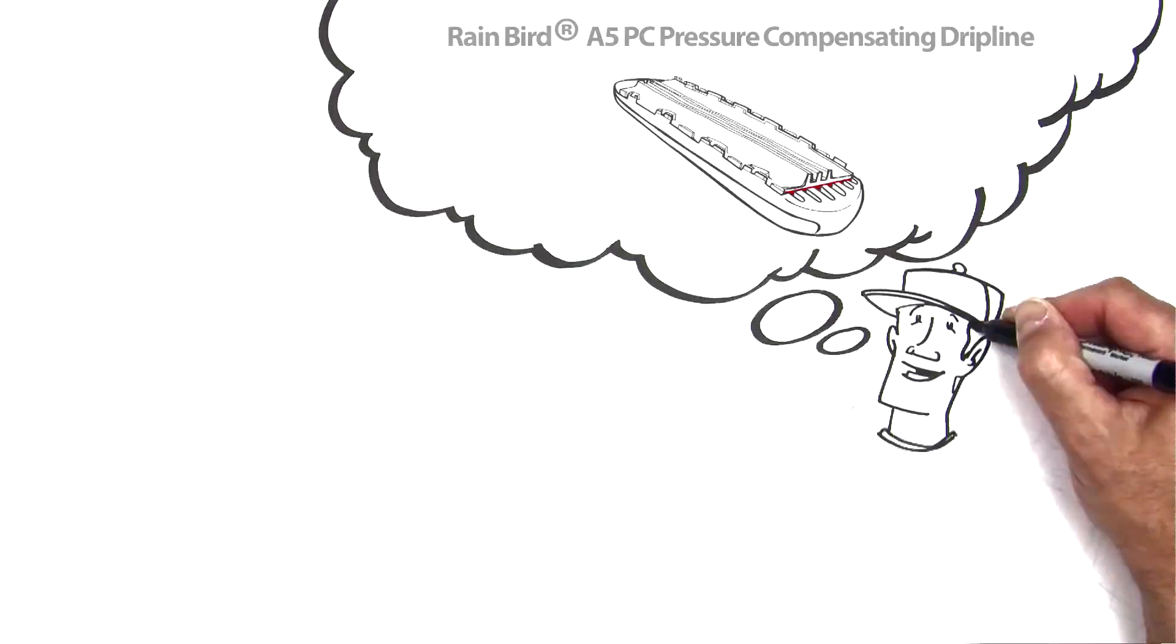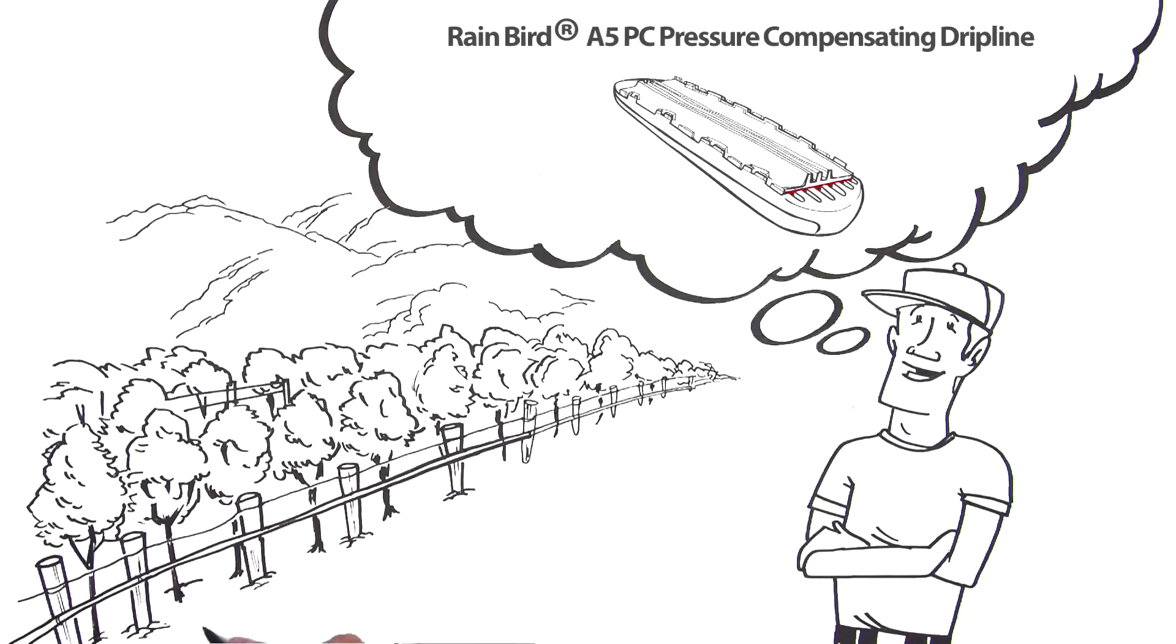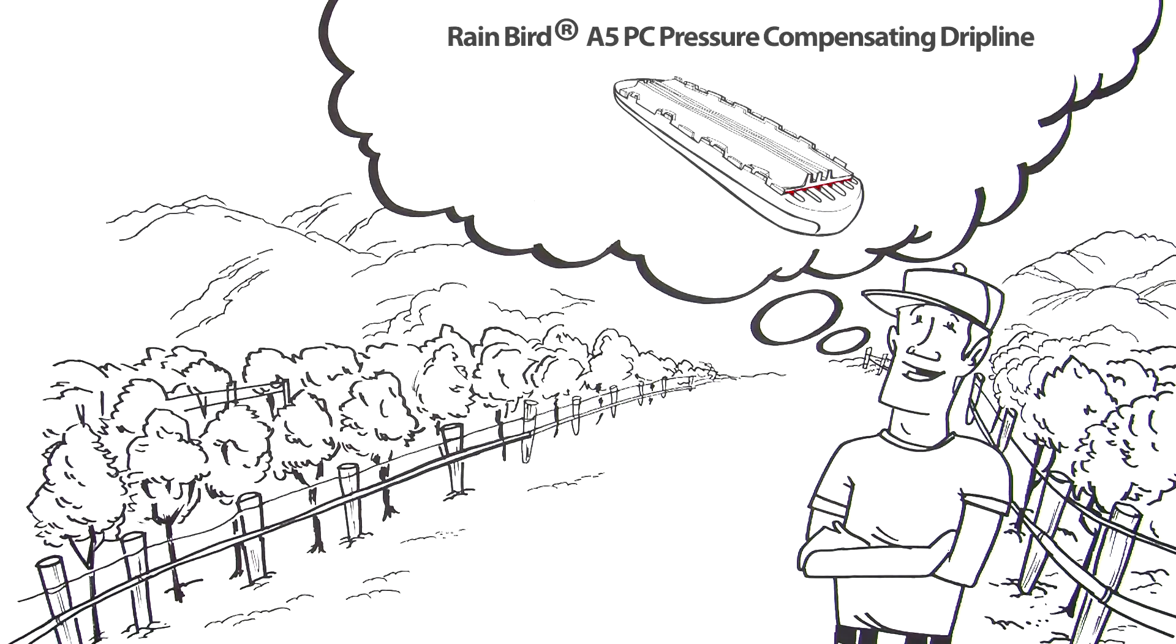The perfect emitter for your vineyard. Designed and built the way you would do it. Ask your dealer about A5PC Dripline from Rainbird.